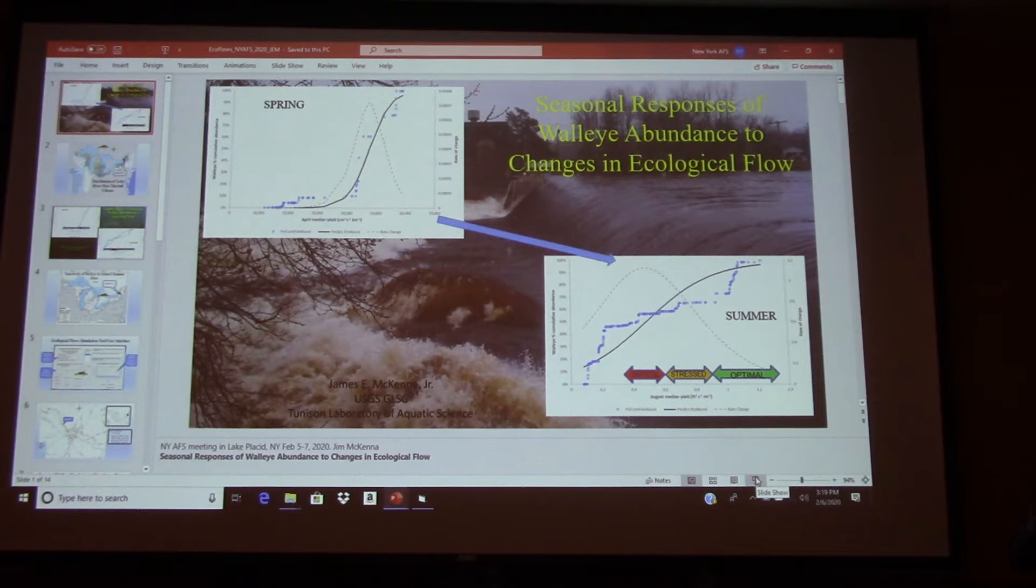And so I'm going to talk to you a little bit today about ecological flows. This is essentially looking at the relationship between flow and the abundance of given species of fish that can be supported at any given flow.